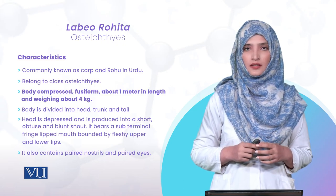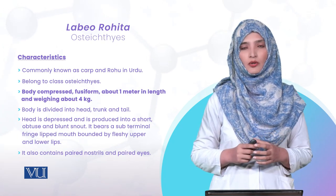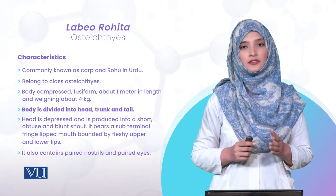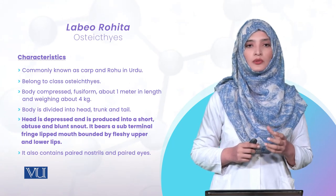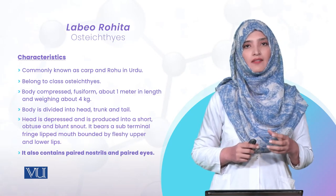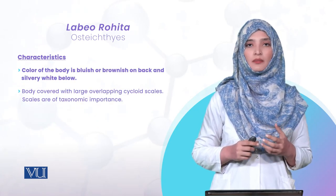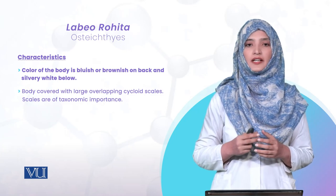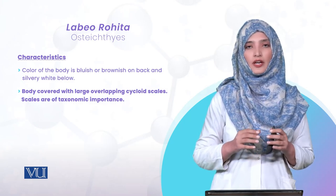Labeo rohita کی body compressed، fusiform ہے، تقریباً 1 meter length اور 4 kg weight کے roundabout۔ Body کے تین parts ہیں: head, trunk اور tail۔ Head region compressed ہوتا ہے جس میں fringe lips، paired nostrils اور paired eyes ہیں۔ Body کا color dorsal side پر bluish اور brownish، جبکہ ventral side پر silvery white ہوتا ہے۔ پوری body پر cycloid scales present ہوتے ہیں۔